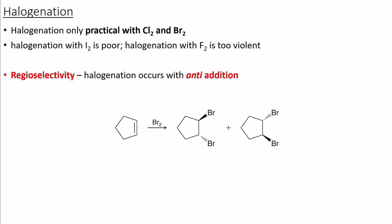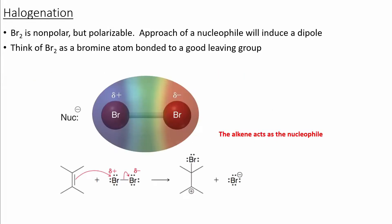Halogenation is going to occur via anti addition, which means that we'll end up with a trans product. It's important to note that the reactions which go through a three-membered ring transition state will often produce a trans product. The reactions in which both substituents approach from the same face will end up with the syn addition product.